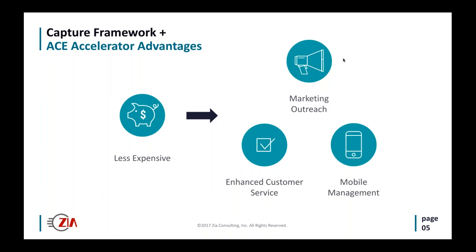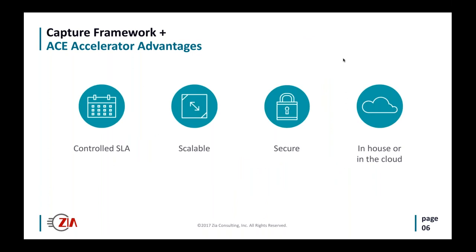What we propose is using a tool called Episoft along with some BPM tools and an accelerator we created called ACE — the Advanced Closing Extraction. This gives you more control, and it's less expensive. With the savings, you can make the business more profitable, invest in marketing outreach, customer service, or mobility solutions. There are many ways to use this Episoft framework and our accelerator within mortgage to get a solution up very quickly.